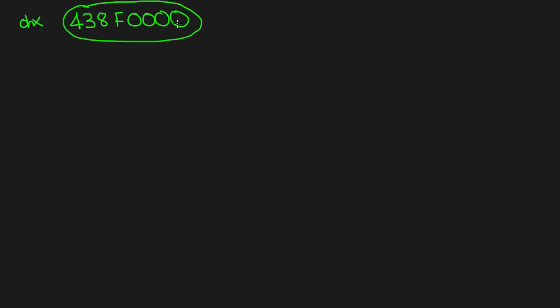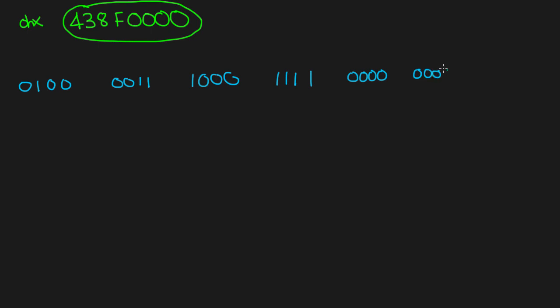This is the hex version of an already-converted IEEE 754 single precision floating point number, and we want to convert it back to regular decimal. First, we convert the hex to binary: 4 is 0100, 3 is 0011, 8 is 1000, F is 1111, and then the four zeros give us 0000 repeated — totaling 32 bits.